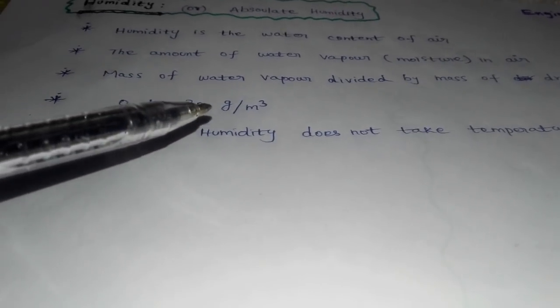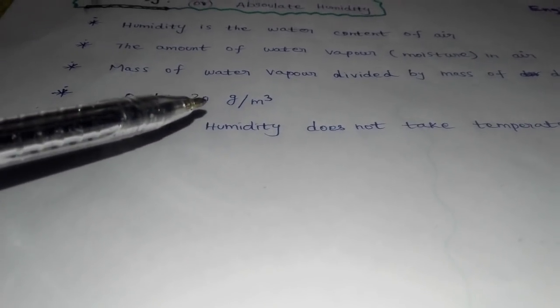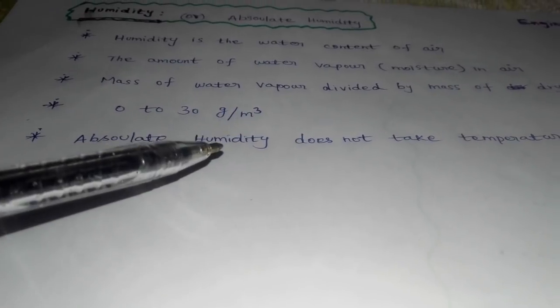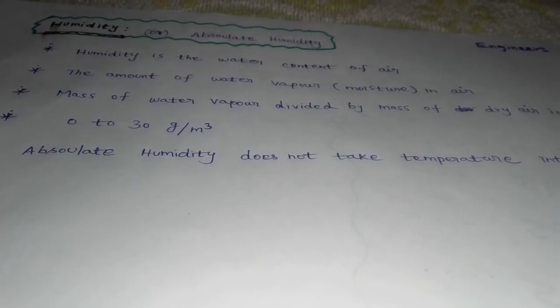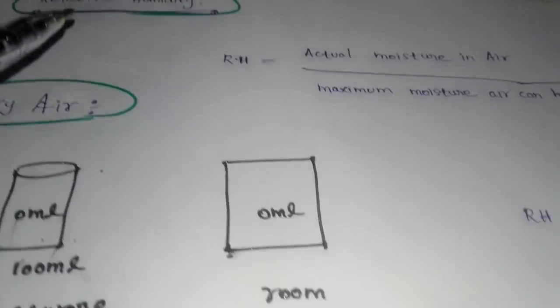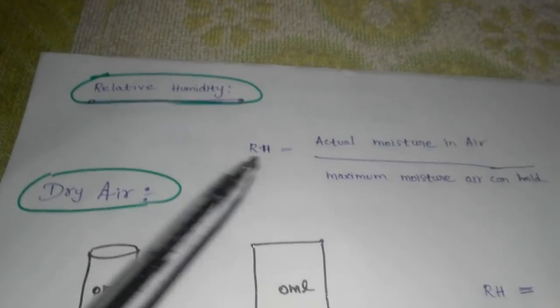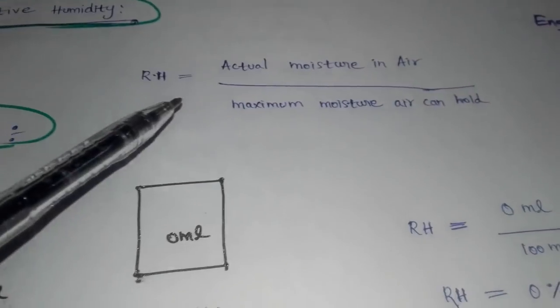The next thing is relative humidity. Relative humidity is the same — we do more of the humidity. Relative humidity: this is the formula for relative humidity, which is the maximum moisture the air can hold.